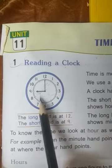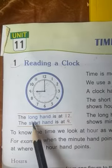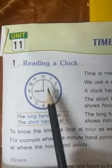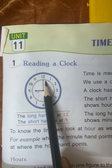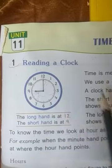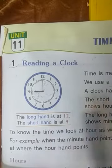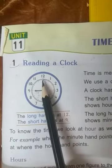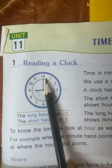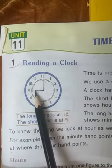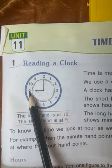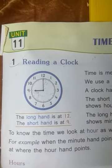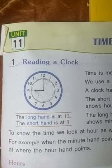For example, look here. When the minute hand points to 12, we tell the time by looking at where the hour hand is. The minute hand is at 12 and the hour hand — which is the short hand — is at 9. So the time on this clock is 9 o'clock.